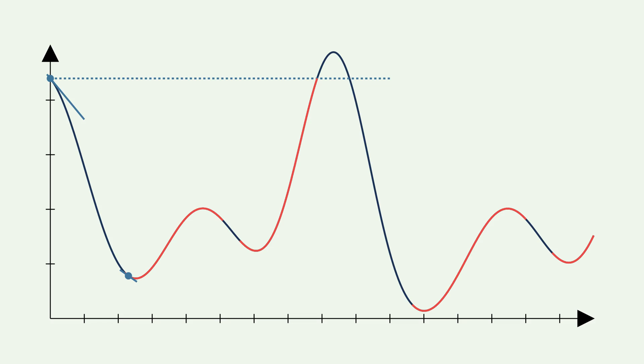A similar argument can be made for a large and positive gradient. Together these conditions are known as the strong Wolfe conditions and indicate which points we are searching for in the line search. Similar to how an extremal point of the function has a gradient of zero, we can interpret the Wolfe conditions as points that are sufficiently extremal, meaning their gradient is small enough. Note that both minima and maxima fulfill these conditions, however the algorithm we will come to in a moment will find a minimum.